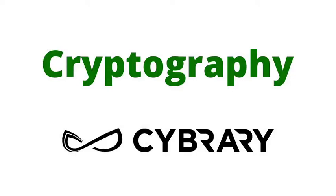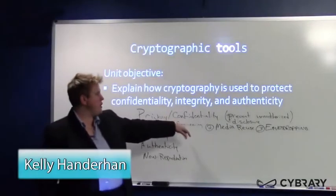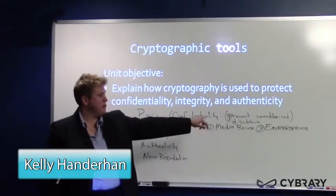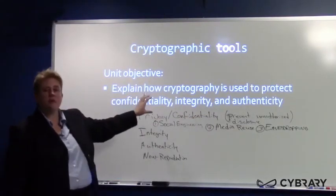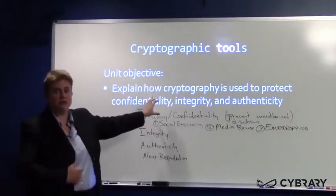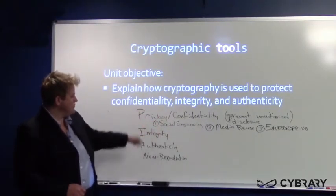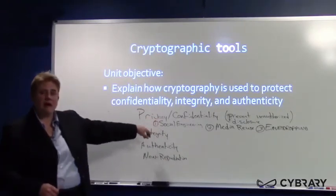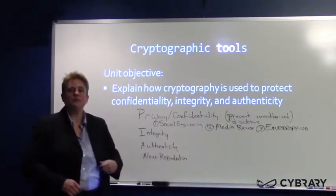We talked about privacy, also known as confidentiality, and our three main threats to privacy: social engineering, media reuse, and eavesdropping. When people talk about cryptography, that's what most people associate with it. However, other services that cryptography can provide include integrity, authenticity, and non-repudiation.